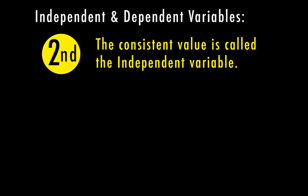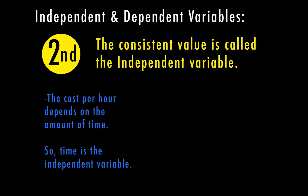The consistent value is called the independent variable. When dealing with distance and time, time is the independent variable because time is happening no matter what — it's not going to change depending on what's happening. Things are going to change depending on the time. For example, the cost per hour depends on the amount of time, so time is the independent variable.